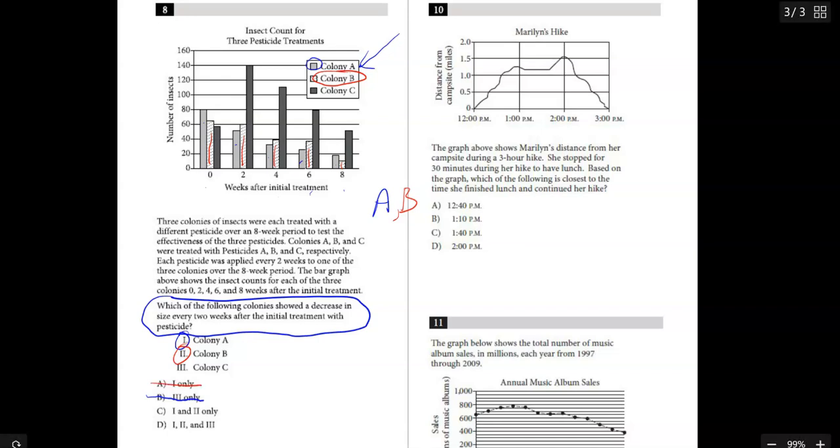So now we got to see about colony C. Looking at colony C, it starts here and then it got bigger, and then smaller, smaller, smaller. So we have a problem—it did not get smaller every single week. So we know that three doesn't work, so the correct answer here is C.